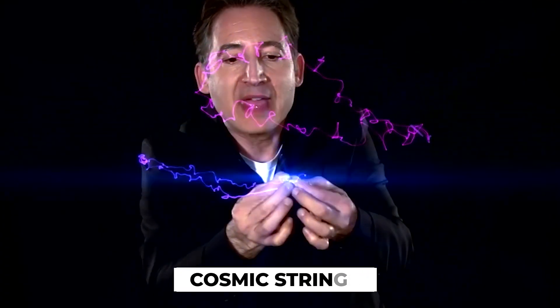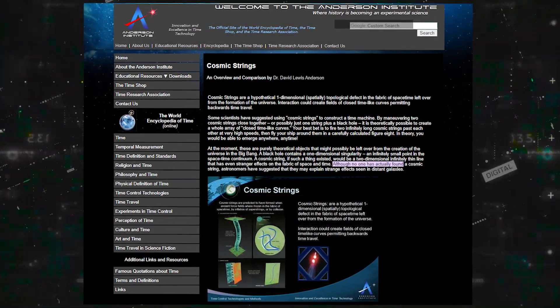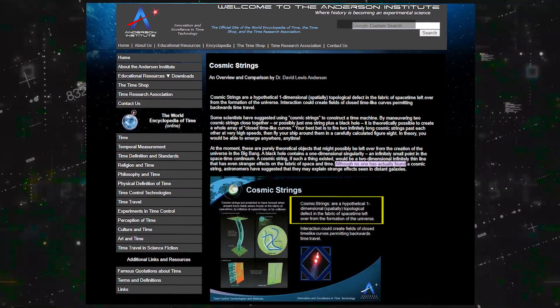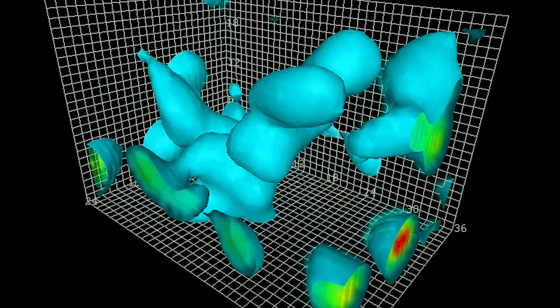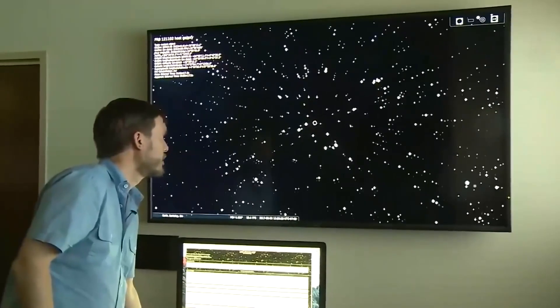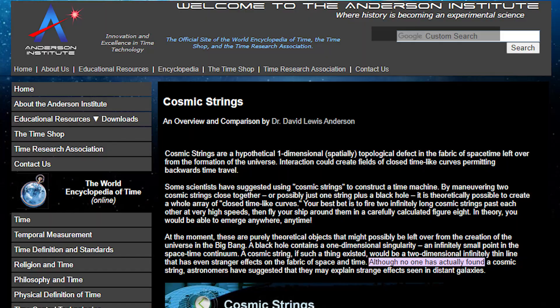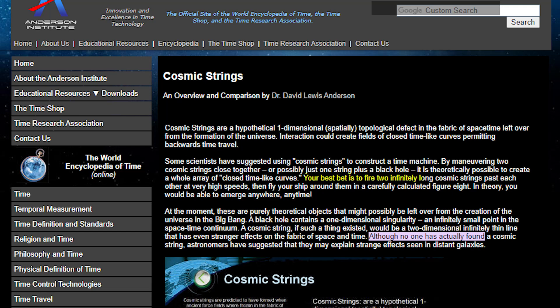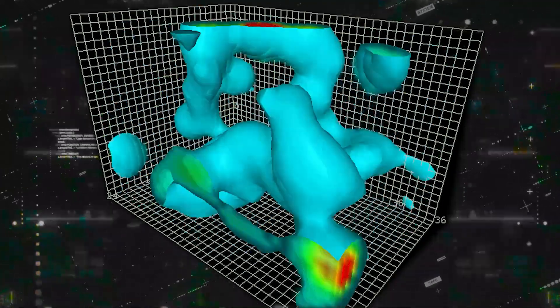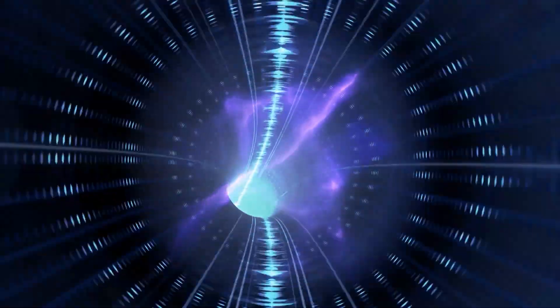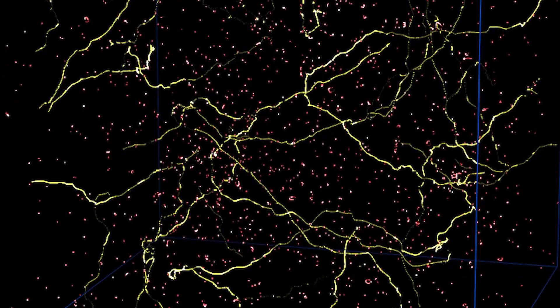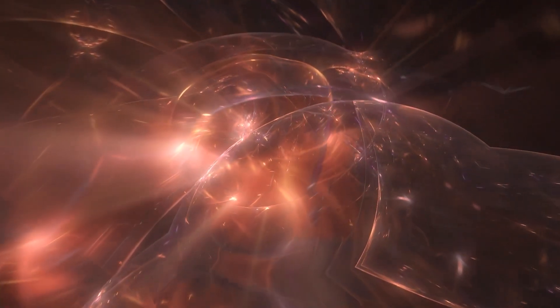Cosmic strings sound like something out of a comic book. According to a study, cosmic strings are a hypothetical one-dimensional spatially-topological defect in the fabric of space-time left over from the formation of the universe. Interaction with cosmic strings could create fields of closed, time-like curves that allow backward time travel. Some scientists suggest that these cosmic strings could be used to construct a time machine. At the moment, this is just a theoretical object, as no one has actually found a cosmic string. If such a thing existed, it would have an extremely strange consequence on the fabric of space and time. Given that few even have little to say on the level of destruction this could cause, we think a B does it justice.